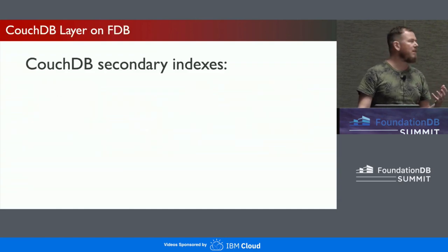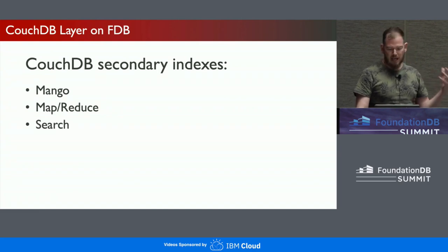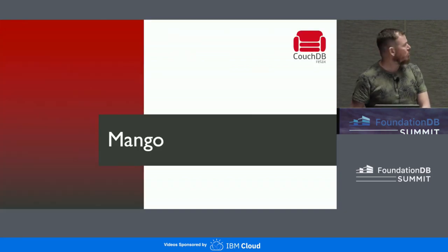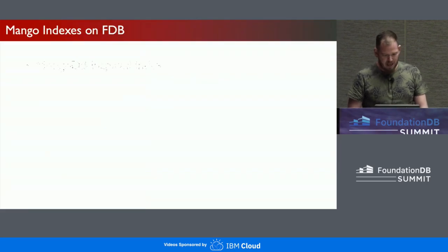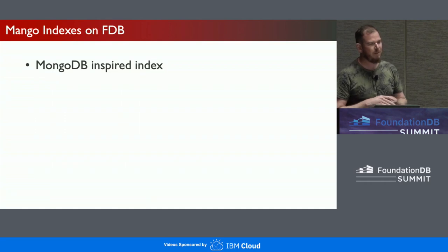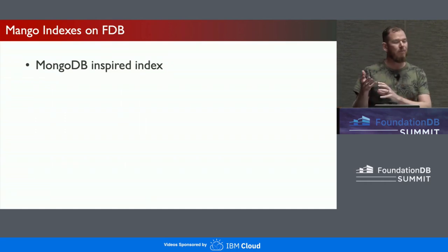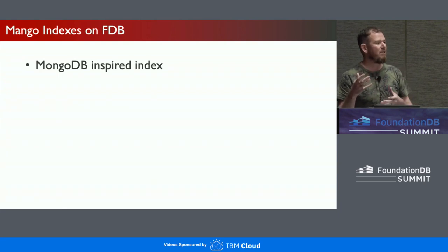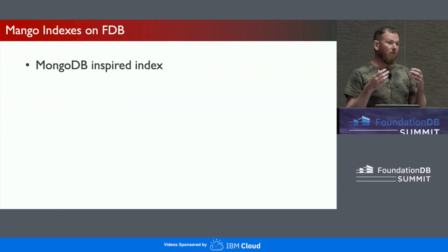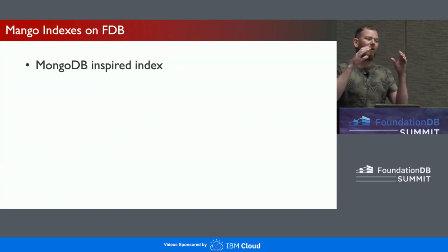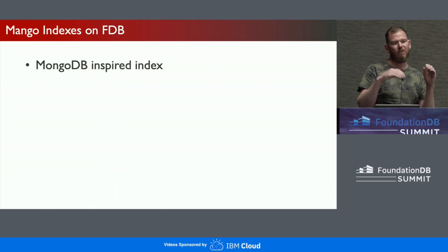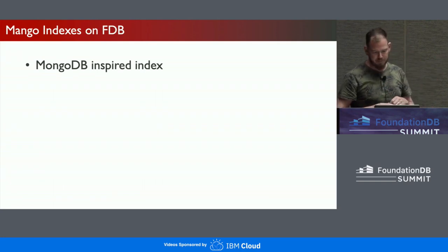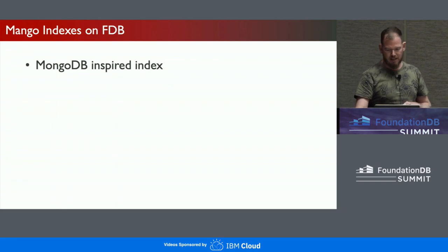CouchDB has three main secondary indexes: Mango, MapReduce, and Search. We're going to look at all three and how we're implementing them on top of FoundationDB. Mango is very much inspired by MongoDB. It's a simpler querying syntax than MapReduce, and follows the same querying syntax as MongoDB — you create indexes and query using the same selectors that MongoDB does. Currently in CouchDB, it's a wrapper on top of CouchDB's MapReduce indexes, so every time you make a query, we use MapReduce indexes underneath with a wrapper layer on top.